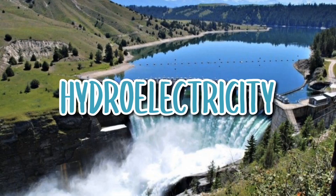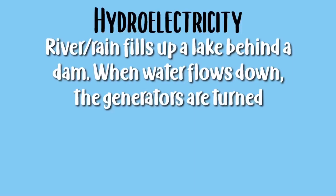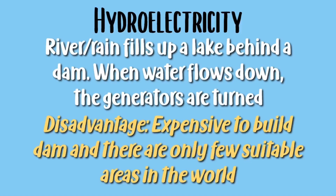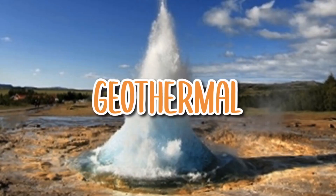Hydroelectricity is also another example of renewable energy. A river or rain fills up a lake behind a dam. When the water flows down, the generators are turned. The disadvantage is that it is expensive to build a dam and there are only a few suitable areas in the world.